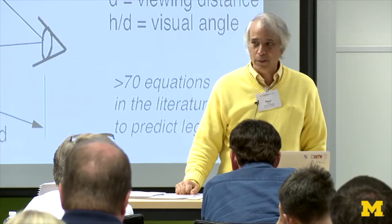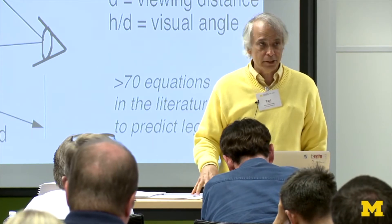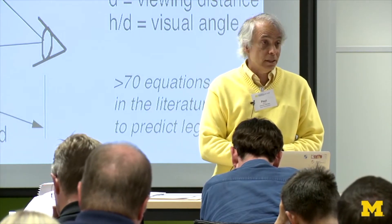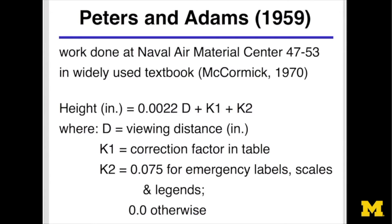This is a topic within human factors that has probably gotten more studies and more research than any I can think of. In one review we did, we found 70 equations — there are probably actually about 100. I'm going to give you three from that entire set that I think are characteristic and helpful in terms of understanding how big you need to make something so it can be read. The first one, at the bottom of page 3-16, is the so-called Peters and Adams formula, which came from a Naval Air Materials Center report done between 1947 and 1953.